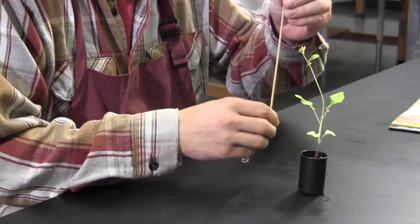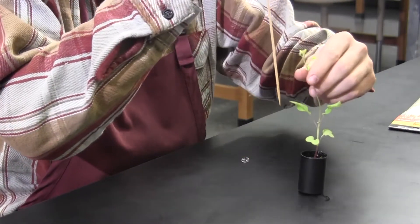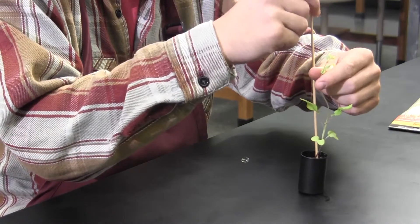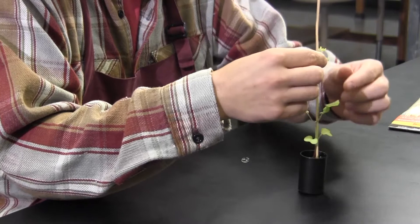Eventually, your RCBR may require help remaining upright. Staking will fix any issues of plants falling over. Be careful to not cause damage to the plants when staking.